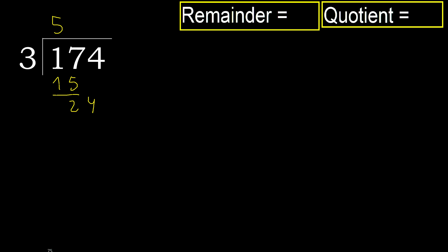Next digit brings 24. 3 multiplied by 9 is 27 — 27 is greater. 3 multiplied by 8 is 24. 24 is not greater, subtract: remainder is 0. Next.